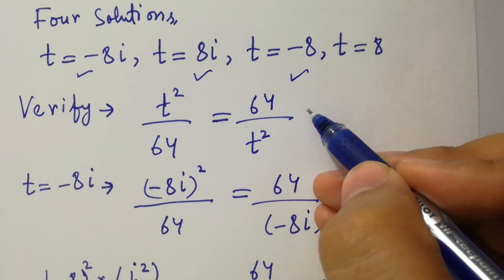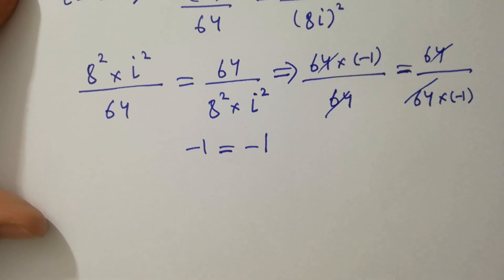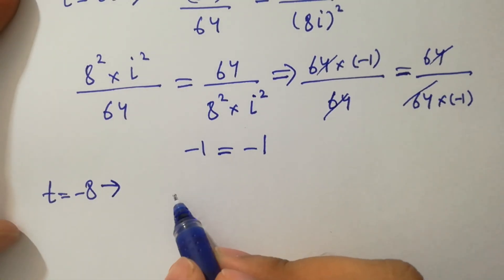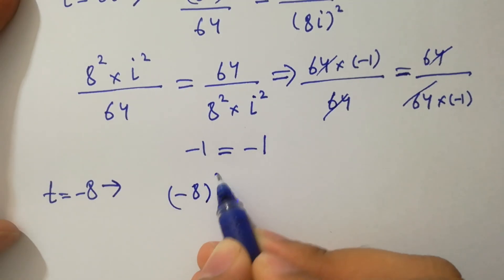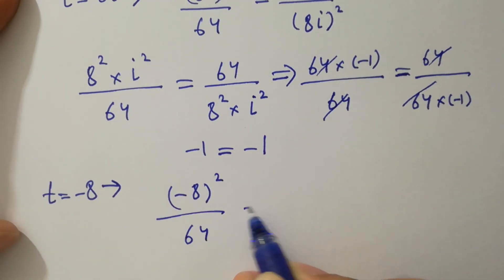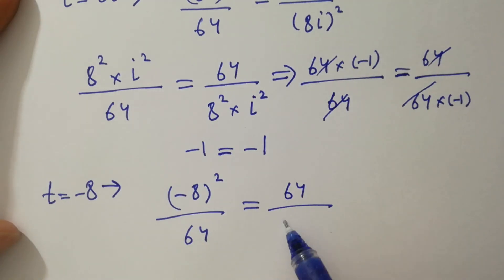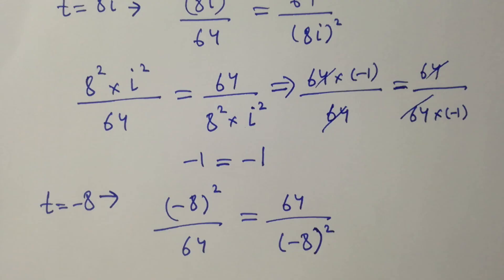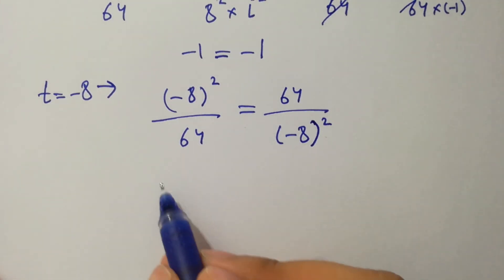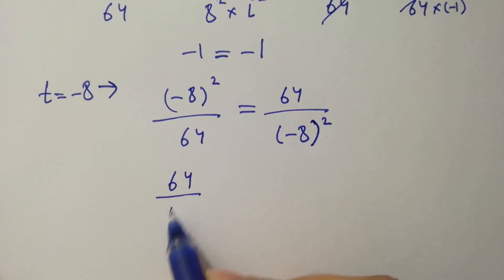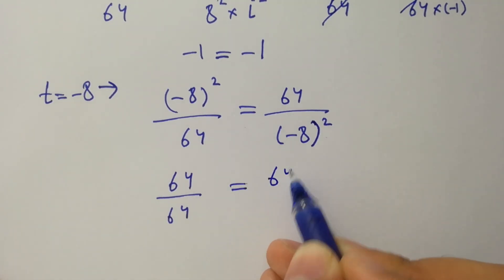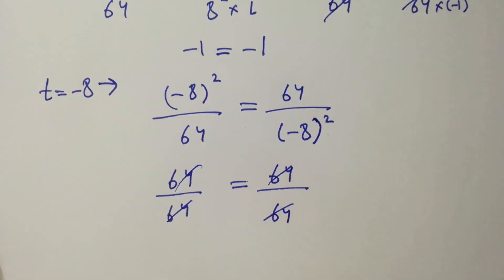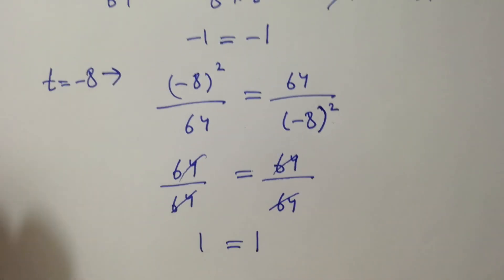Next, for t equal to minus 8, put into the equation. We have minus 8 squared over 64 equal to 64 over minus 8 squared. Then 8 times 8 is 64 over 64, equal to 64 over 64. The 64s cancel and we get 1 equal to 1.